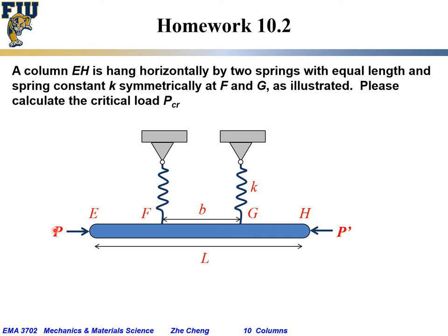As you can imagine, when the load is very small, the rod will maintain its horizontal position. But when the load is too large, due to non-ideal misalignment or disturbance, it may rotate away from the horizontal location. We want to calculate the so-called critical load — the load above which it will lose stability.